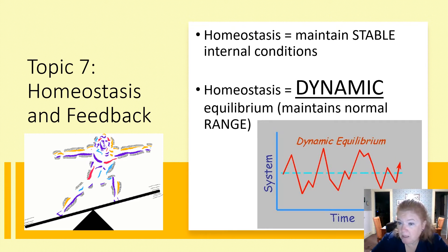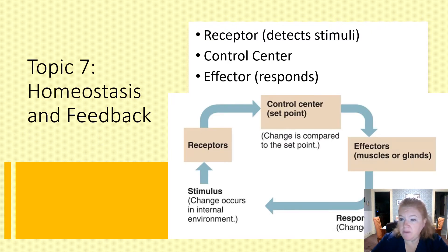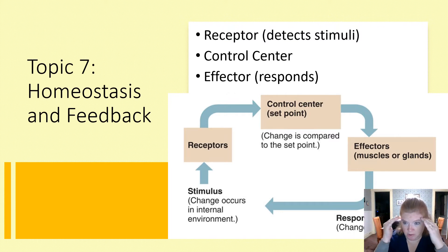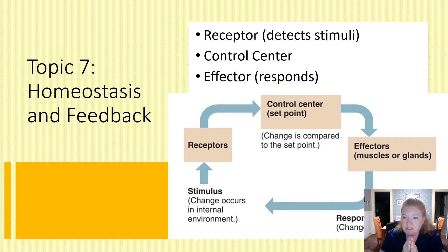Sweating or shivering only occurs when your body recognizes the temperature has deviated too much. The three main parts of the homeostatic feedback loop are: a receptor picks up a stimulus and sends a message to the control center; the control center decides what to do and sends a message to an effector; and then there's a response. So: stimulus, receptor, control center, effector, response.